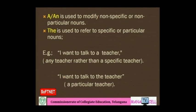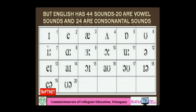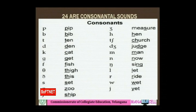If you want to use 'a' or 'an' properly, we shall first learn about the letters and sounds in English. There are 26 letters in the English alphabet, of which 5 are vowels and 24 are consonants. But English has 44 sounds — 20 are vowel sounds and 24 are consonant sounds. The use of 'a' or 'an' depends on the sound the word begins with.